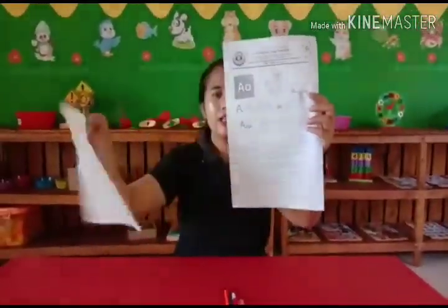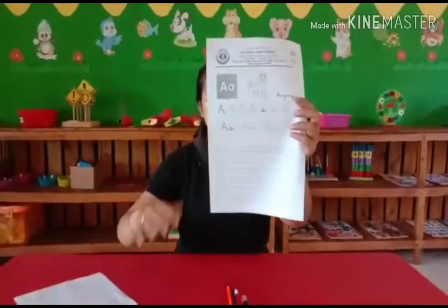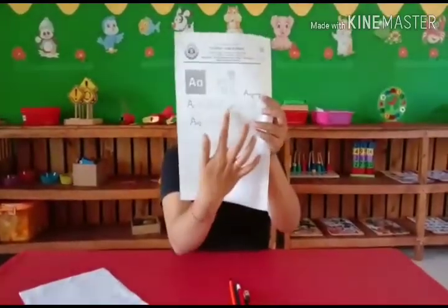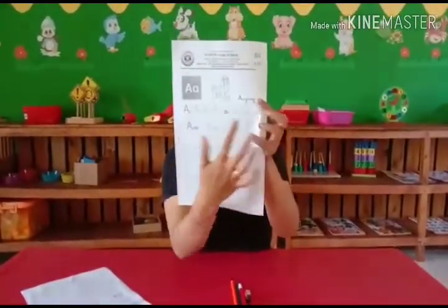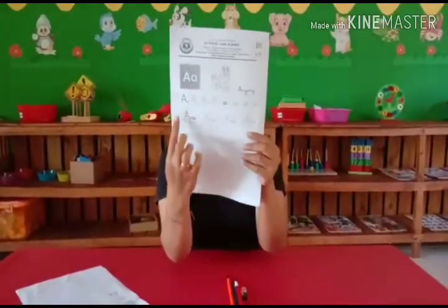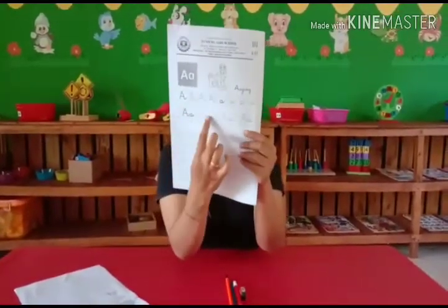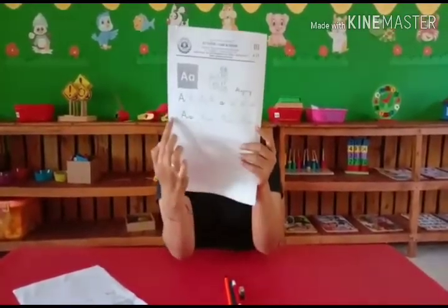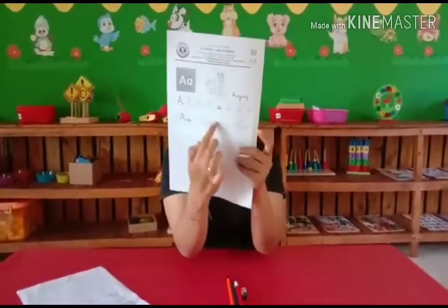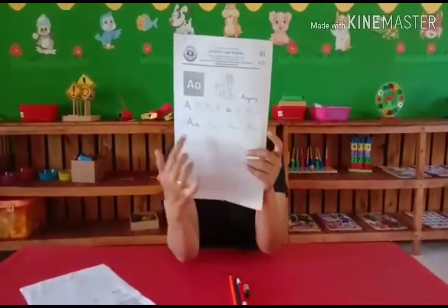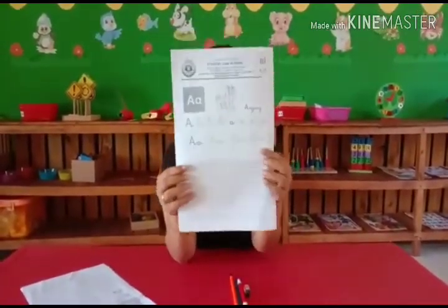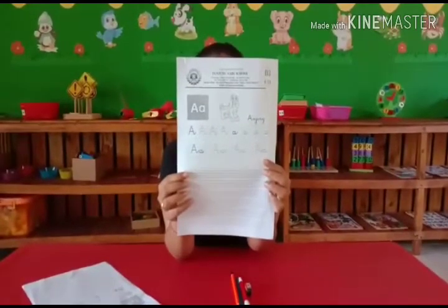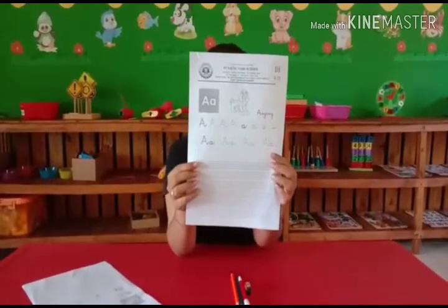Here we have capital letter A and small letter A, and you have to write them on the lines neatly. You write on the small lines, but the writing must still be neat. This is called tulis jalan — freehand writing, okay?